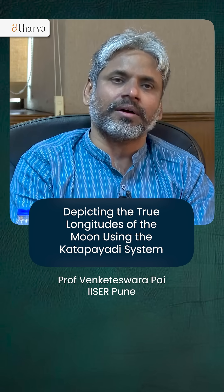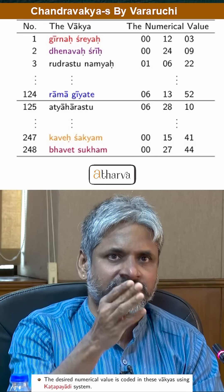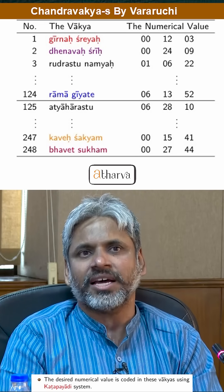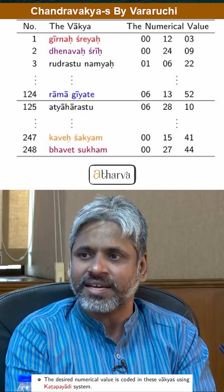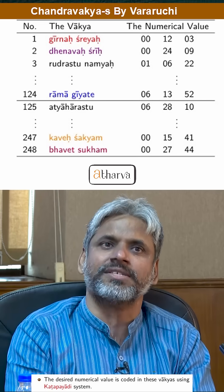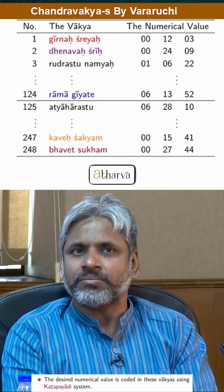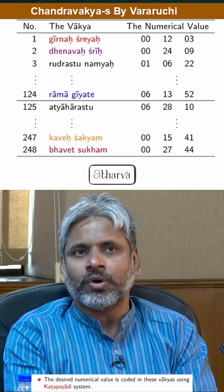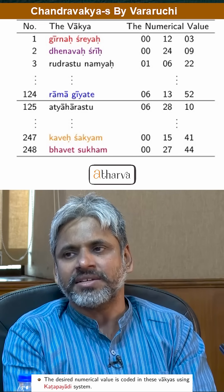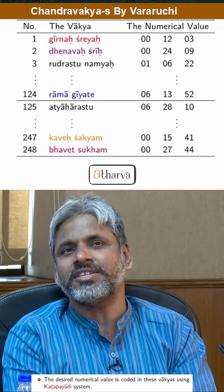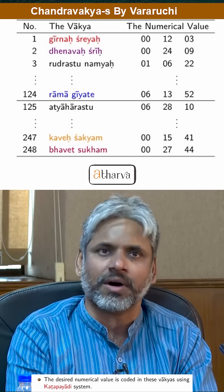This system is used in representing Chandravakyas. As we see here, the first is 'Girna Shreyaha', followed by 'Dhenavashrihi', 'Rudrastu Namiha', etc. They are known as Girna Shreyadi Vakyas because they start with the phrase 'Girna Shreyaha'. They relate to the moon's motion, hence the name Chandravakyas, and are composed by Vararuchi — so they are also known as Vararuchi Chandravakyas, or simply Vararuchi Vakyas.